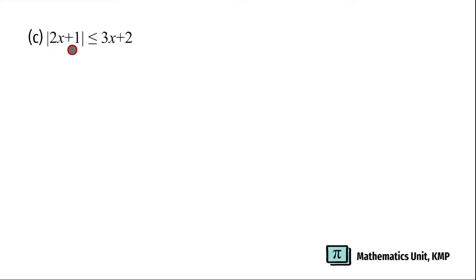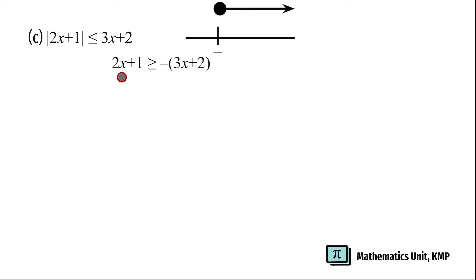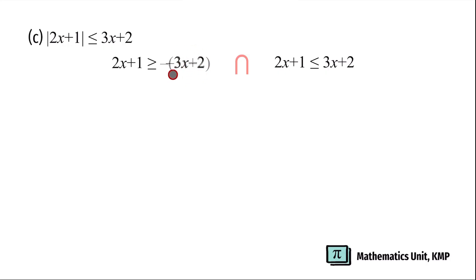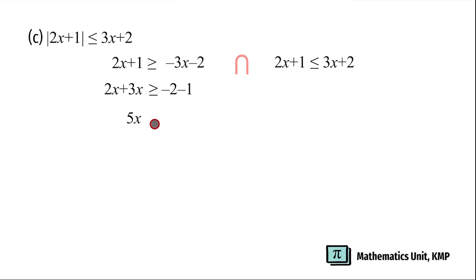Absolute value of 2x plus 1 less than or equal to 3x plus 2. Let us define first. We have 2x plus 1 greater than or equal to negative (3x plus 2) intersect with 2x plus 1 less than or equal to positive 3x plus 2. Multiplying the negative through the bracket gives negative 3x minus 2. Simplifying the first inequality: bring negative 3x to the left to get 2x plus 3x, and bring positive 1 to the right to get negative 2 minus 1. So 5x is greater than or equal to negative 3. Dividing both sides by 5, x is greater than or equal to negative 3 over 5.